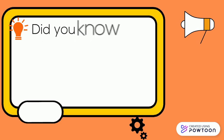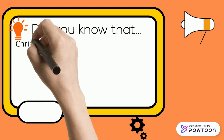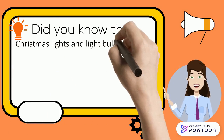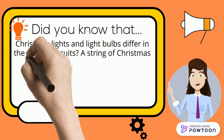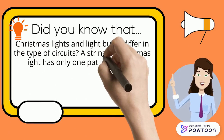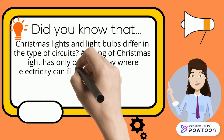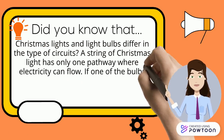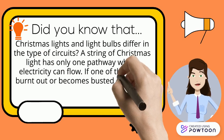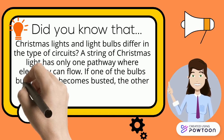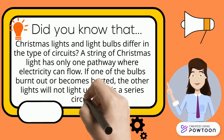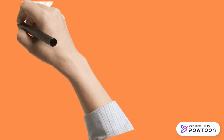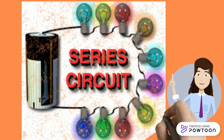Did you know that Christmas lights and light bulbs differ in the type of circuits? A strand of Christmas lights has only one pathway where electricity can flow. If one of the bulbs burns out or becomes blasted, the other lights will not light up. This is a series circuit — this is an example of a series circuit.